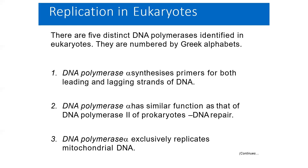Number two is DNA polymerase beta. It has a similar function to that of DNA polymerase 2 of prokaryotes — DNA repair. Number three, DNA polymerase gamma, which exclusively replicates mitochondrial DNA.